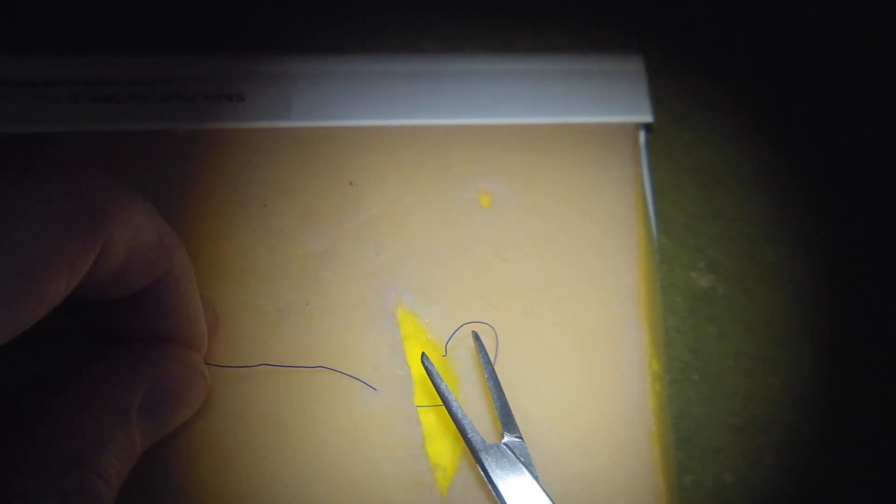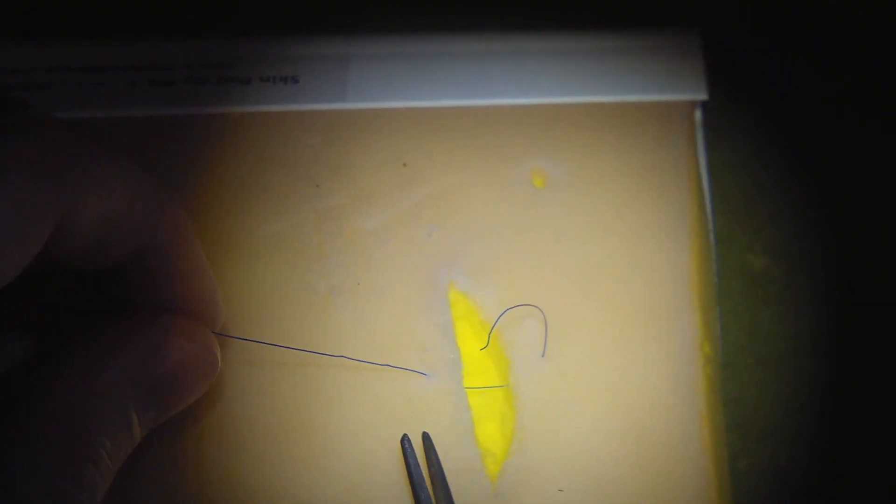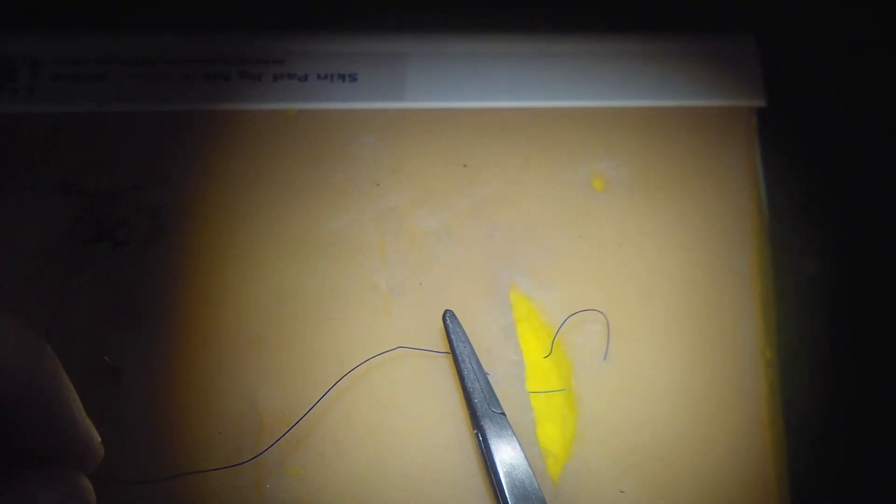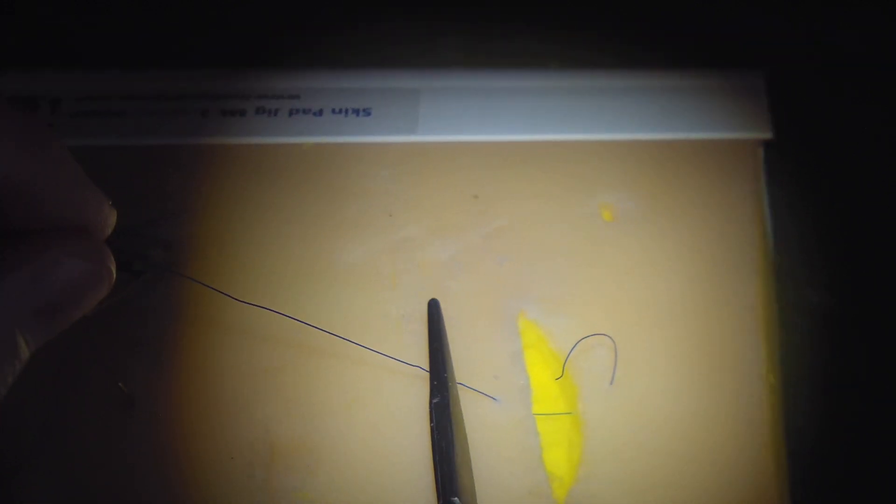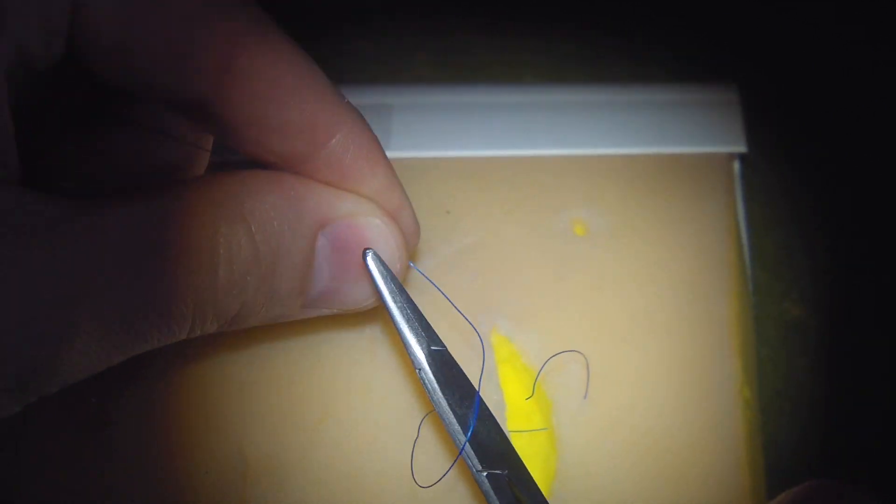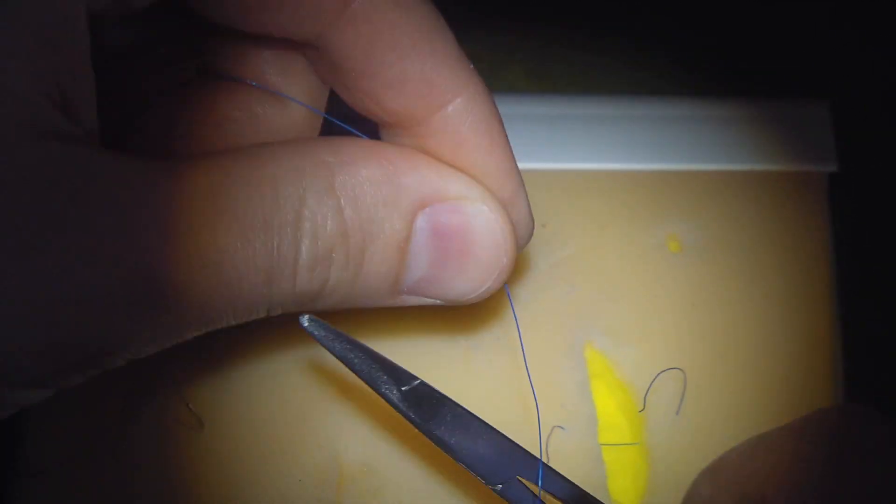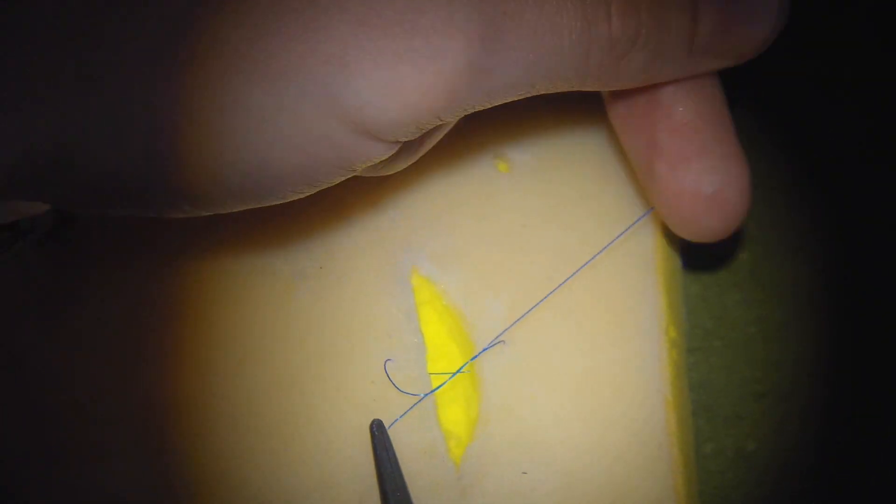We've got a suture free end here and the needle end there. So what we normally do with our surgeon's knot is put the needle driver, needle holder, within this arc made by the two pieces, take up two throws and grip the free end as normal and then pull that down.